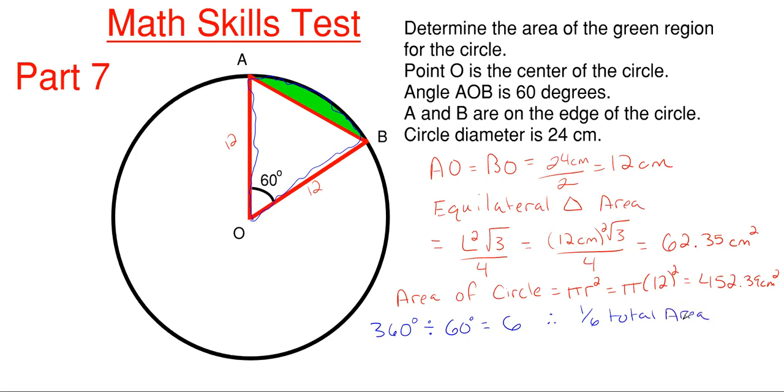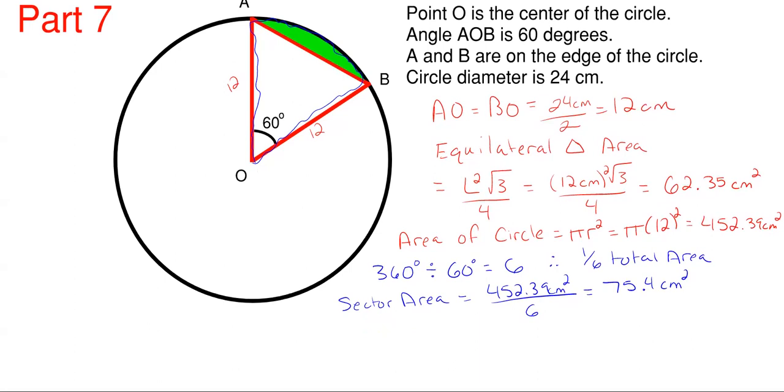What is 1/6 of our total circle area? Our sector area is just going to be the 452.39 cm squared all over 6, which gives me approximately 75.4 cm squared for this little wedge shown out in blue. Now with the sector area known and the area of the equilateral triangle, I can just subtract the two and I can get the remainder which is my green portion.